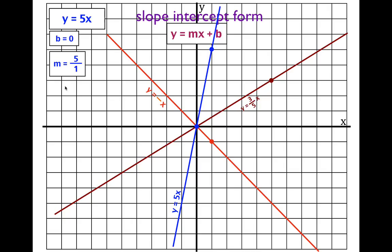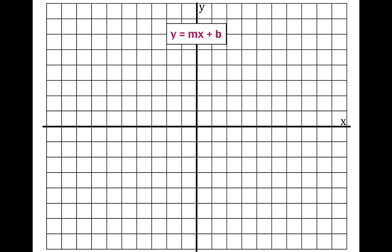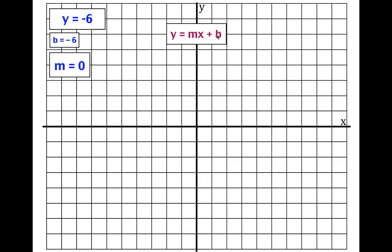Now for the other case: these equations have a number but no x, which means the slope is zero — because zero times x is zero — and all we have is the y-intercept. For y equals minus six, the y-intercept is obviously minus six. Write it down. The slope is zero. Some people say this line has no slope, but it does have a slope — it's just zero, which means a horizontal line: no rising, no running. Put a point at minus six on the y-axis and draw a horizontal line. That is y equals minus six.